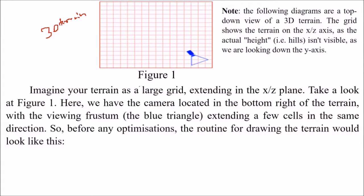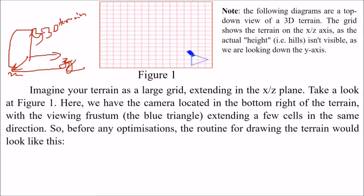Imagine your terrain as a large grid extending in the x-z plane. You can consider x, y, and z — just consider this x-z plane any way you want. Here we have the camera located in the bottom right of the terrain with the viewing frustum — this blue angle — extending a few cells in the same direction.